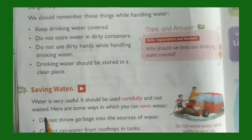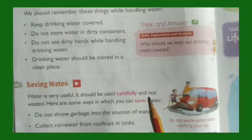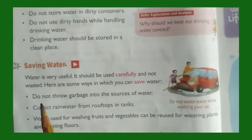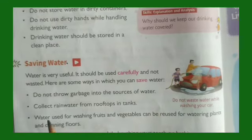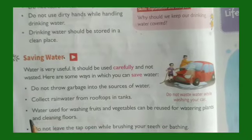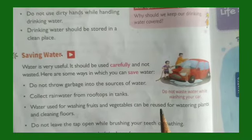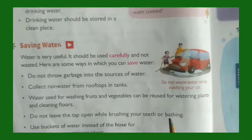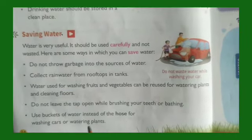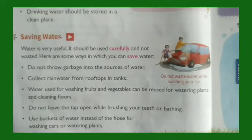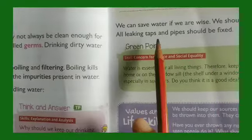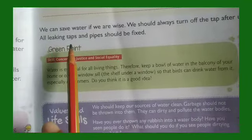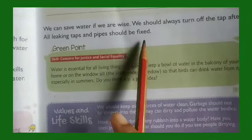Saving water: Water is very useful and should be used carefully without wasting it. Do not throw garbage in the sources of water. Collect water from rooftops in tanks. Water used for washing fruits and vegetables can be reused for watering plants and cleaning floors. Do not leave the tap open while brushing or bathing. Use buckets of water instead of a hose for washing cars or watering plants. Always turn off the tap after use, and all leaking taps and pipes should be fixed.